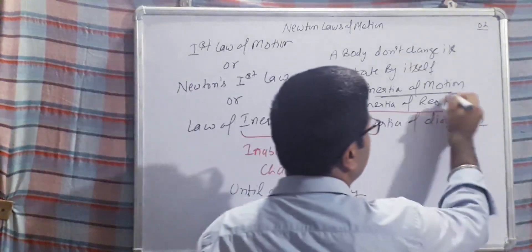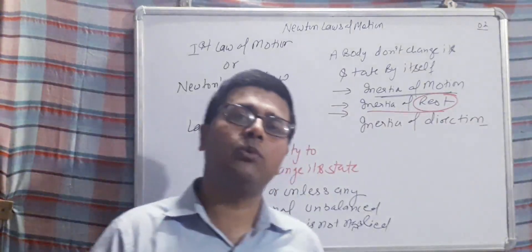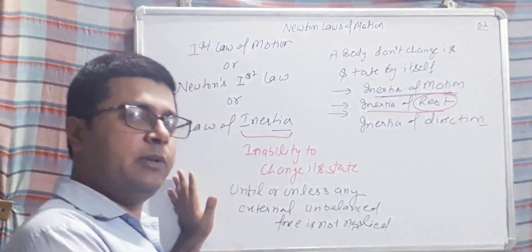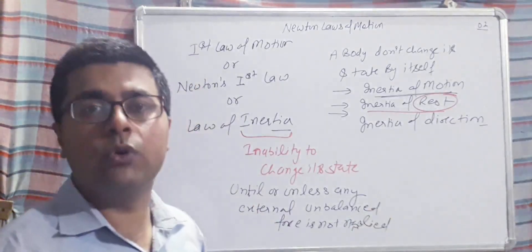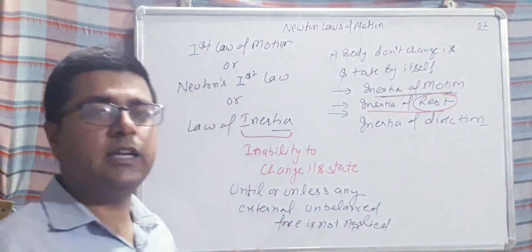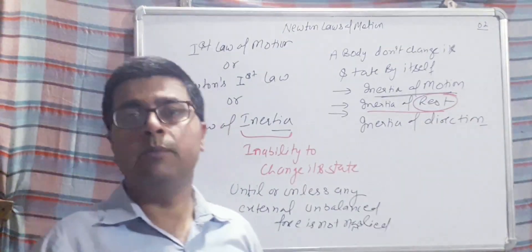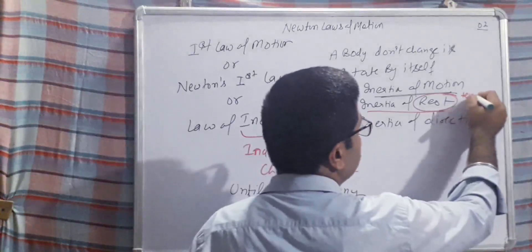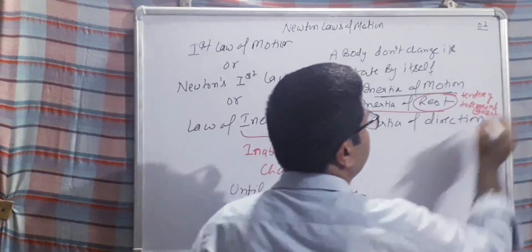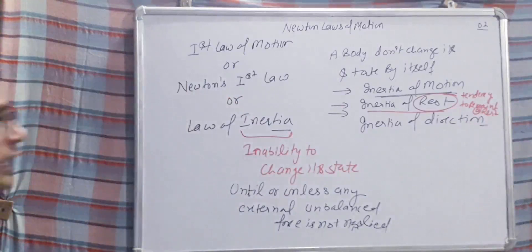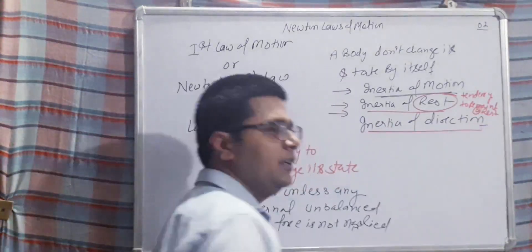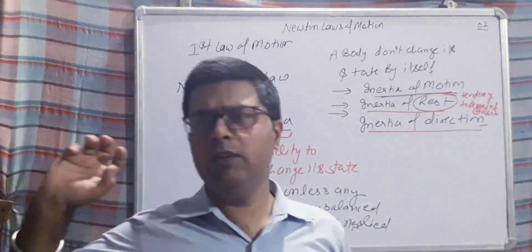Similarly, inertia of rest means the tendency of a body to remain at rest. An object placed here will stay here tomorrow and the day after — until or unless an external force is applied. It will not change its state by itself. This is known as inertia of rest — tendency to remain in the state of rest. In the same way, we have inertia of direction.